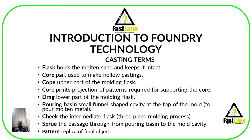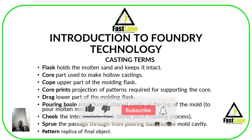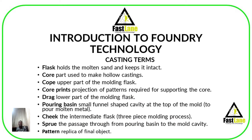We are going to see terms like the pouring basin. A pouring basin is just a small funnel-shaped cavity at the top of the mold — it helps to pour the molten metal. We are going to look at the cheeks. The cheeks are simply the intermediate flasks, and these are common when it comes to the three-piece molding process. The three-piece molding process makes use of the three-piece pattern. We are going to look at different types of patterns: the solid piece pattern, the two-piece pattern, the three-piece pattern, the match pattern, and the plate pattern. The sprue is the passage through from the pouring basin to the molding cavity.